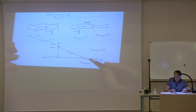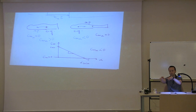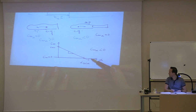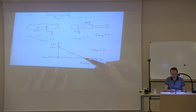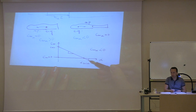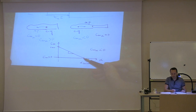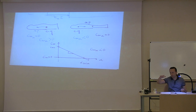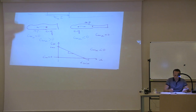If alpha is increasing, you need to have a negative moment — if the airplane is going up, you need a negative pitching moment. If alpha is increasing, you will have a negative moment. If alpha is decreasing, you have a positive pitching moment. That gives you stability. So this graph has to look like that.